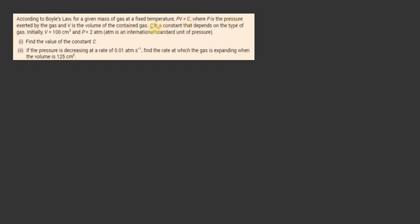And it's equal to a constant. So it tells you c is a constant that depends on the type of gas. In this case, we're told that v is equal to 100 and p is equal to 2. So find the value of the constant c. So pv is equal to c, p is equal to 2, and v is equal to 100. So that means c is equal to 200, and it's a constant. So that's the first bit.